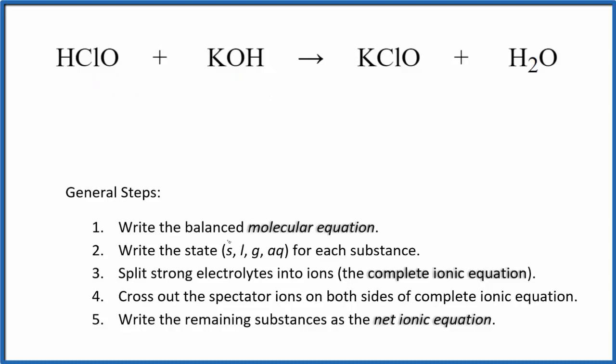First thing we need to do with net ionic equations, we need to balance the molecular equation. In this case, the equation's already balanced. We have one, two hydrogens here, and two over here. And then we have one, two oxygens, two oxygens, and the potassium and chlorine, they're the same as well. So this is already balanced, which is kind of nice.